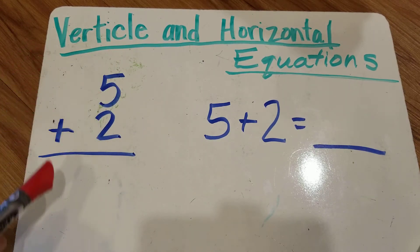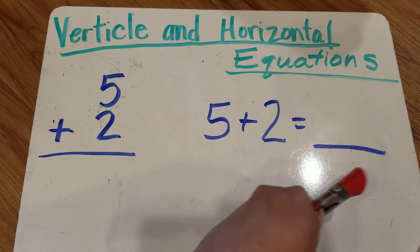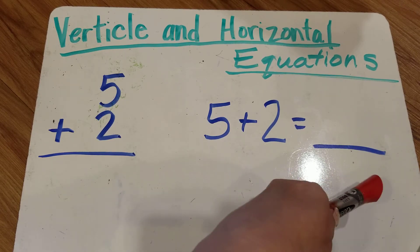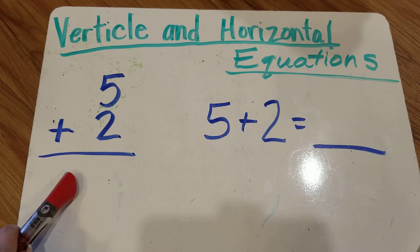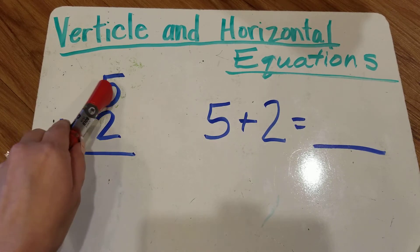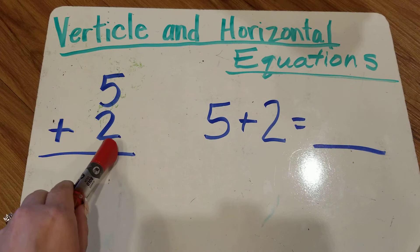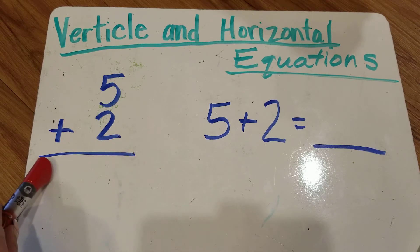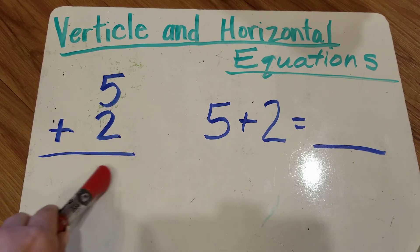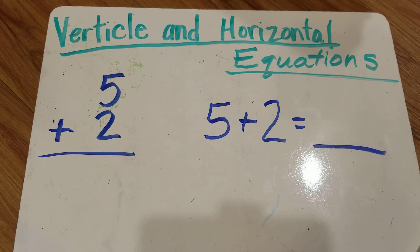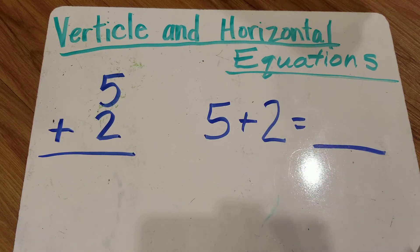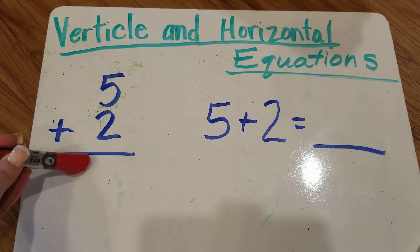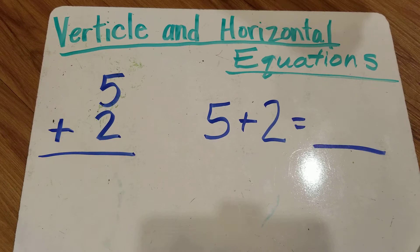Up and down versus in a line that goes sideways. Vertical equations. 5 plus 2 with a line underneath it. This line is like an equal sign. 5 plus 2 equals and we write the answer underneath.